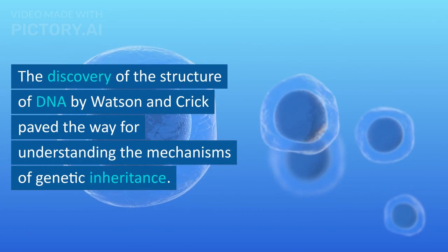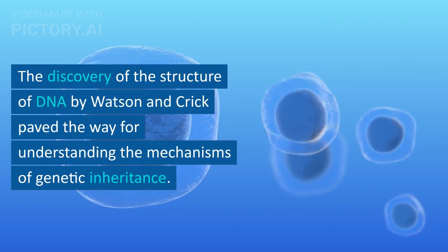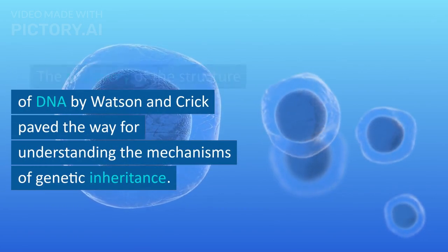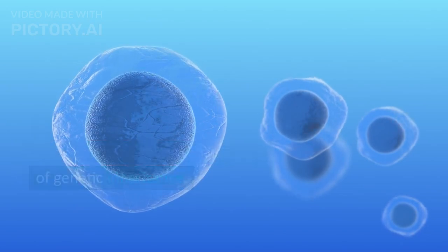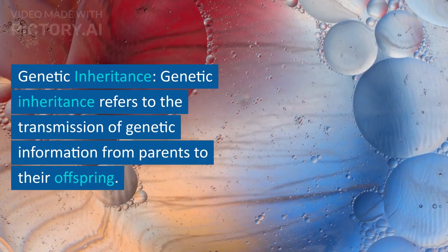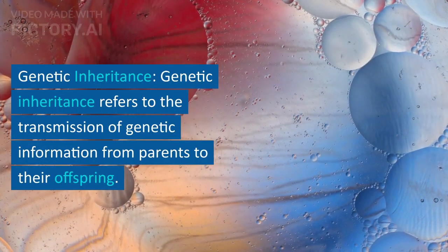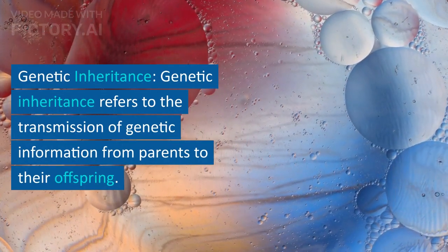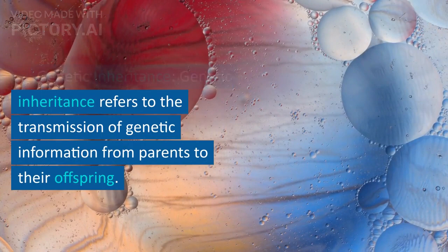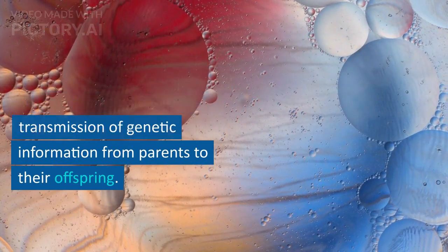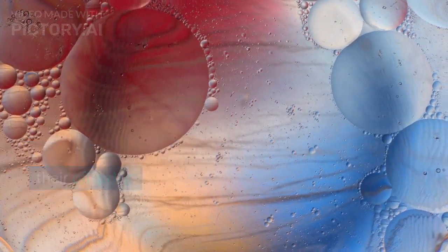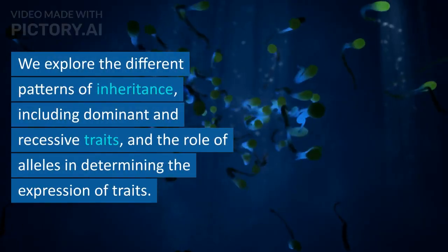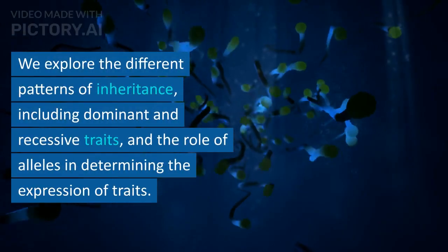The discovery of the structure of DNA by Watson and Crick paved the way for understanding the mechanisms of genetic inheritance. Genetic inheritance refers to the transmission of genetic information from parents to their offspring. We explore the different patterns of inheritance.